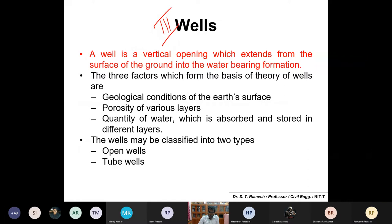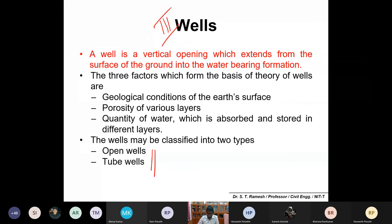The third underground source is a well - a vertical opening that extends from the ground surface into water-bearing strata. You would have seen open wells and tube wells. You dig out the soil down to the water-bearing strata, water collects in the well, and you pump it out. The three factors forming the basis of the theory of wells are: geological conditions and porosity of various layers, quantity of water, and quality of water.